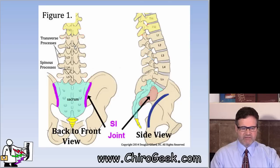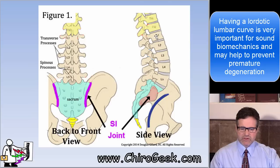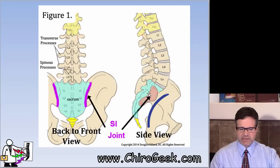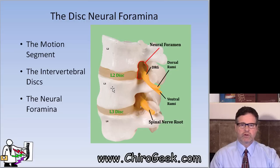There are five lumbar vertebrae that are stacked nicely on top of a base called the sacrum. From the side view, which is called a sagittal view, we can see that we have a curve — this is called a lordotic curve, or lordosis. Between every two vertebrae, we have a little padded structure called the intervertebral disc, which is the focus of our discussion today. Every vertebra-disc-vertebra complex is called a motion segment, and that's the functional unit of the spine.